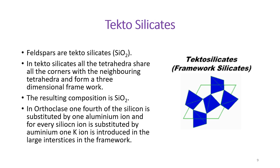Feldspars are tectosilicates, meaning they have a framework silicate structure. In tectosilicates, all tetrahedra share all corners with neighboring tetrahedra to form a three-dimensional framework, resulting in the base chemical composition SiO₂. In orthoclase, one-fourth of the silicon is substituted by aluminum, and for every silicon ion replaced by aluminum, one potassium ion is introduced into the large interstices of the framework. The silicon-to-oxygen ratio is 1:2.